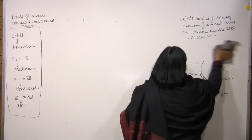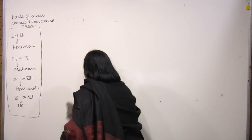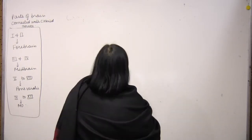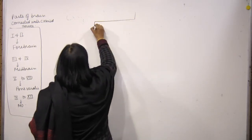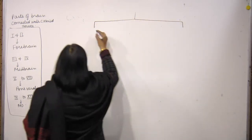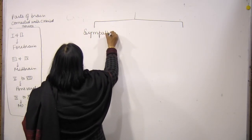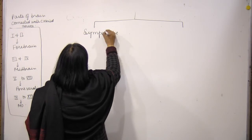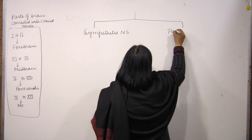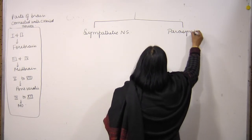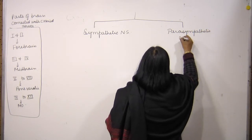Autonomic Nervous System or ANS is further divisible into two parts: Sympathetic Nervous System and Parasympathetic Nervous System.